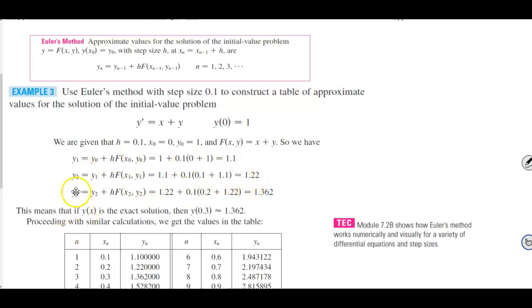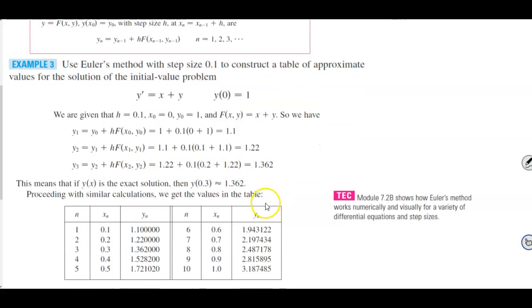If we continue that with step y subscript 3, we get y subscript 2, which is 1.22 plus 0.1 times (0.2 plus 1.22), which is equal to 1.362. So this means that if y(x) is the exact solution, then y(0.3) is approximately 1.362.